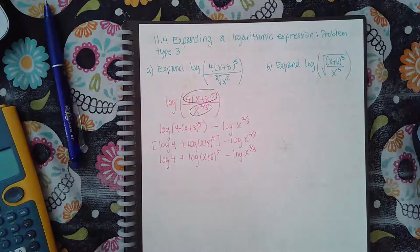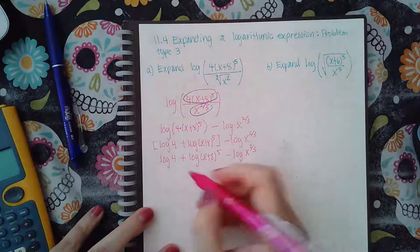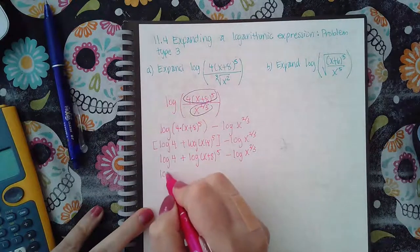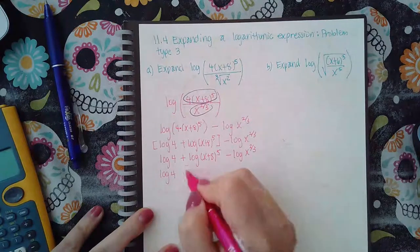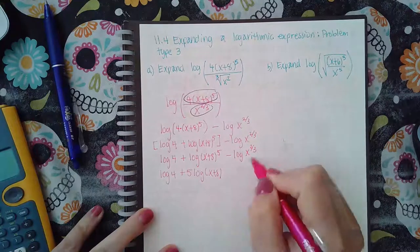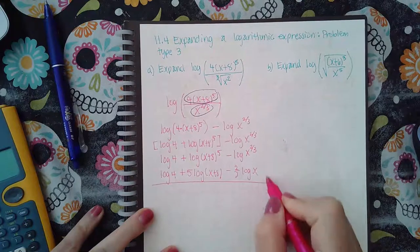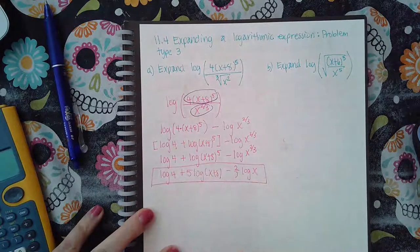Now I'm going to take the exponents. There's no exponent here so this is log 4. This exponent will come to the front, 5 log of x plus 8, minus and this exponent will come to the front, two-thirds log x. And this is the end.